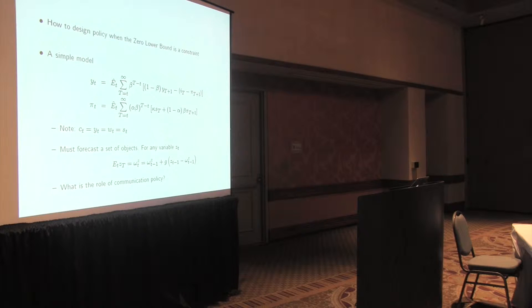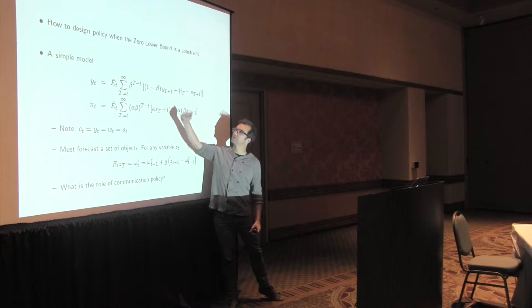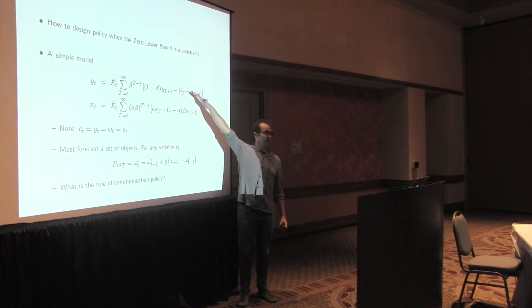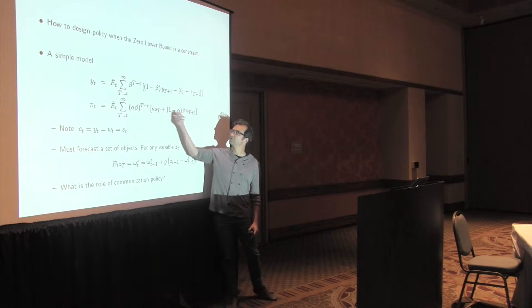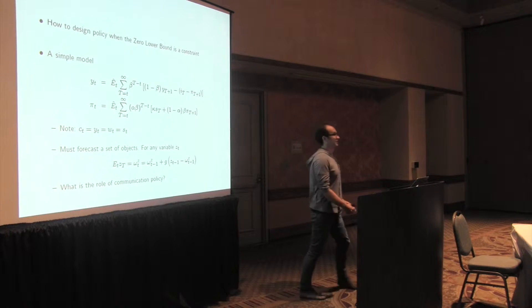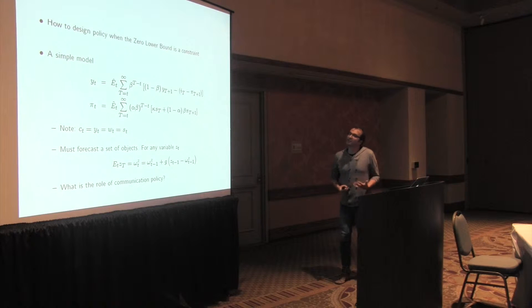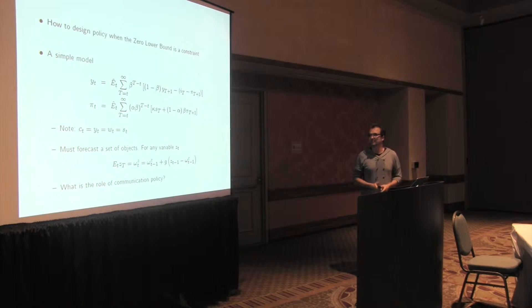So the task is to think about designing monetary policy when the zero lower bound is a constraint. Here's a model, which is just a first-order approximation to what Kaushik and Serbo are working with. So this is just aggregate demand. It's a permanent income guy, essentially. Output's going to depend on projections of future wages or output. They're equivalent in this model. So it's going to depend on variations in real interest rates. Price setters, they're going to care about future marginal costs. They also care about future goods prices, just for strategic complementarity.